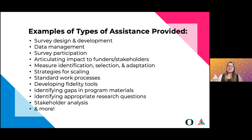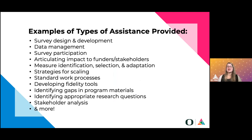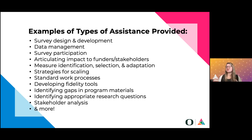Some examples of types of assistance we've provided include: survey design and development, data management, survey participation, articulating impact to funders and stakeholders, measure identification and selection and adaptation, strategies for scaling, standard work processes, developing fidelity tools, identifying gaps in program materials, identifying appropriate research questions, stakeholder analysis, and much more. Having worked with so many organizations, we've run the gamut of anything involving measurement and evaluation.